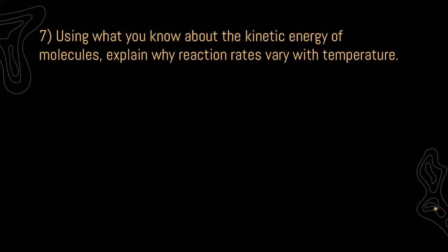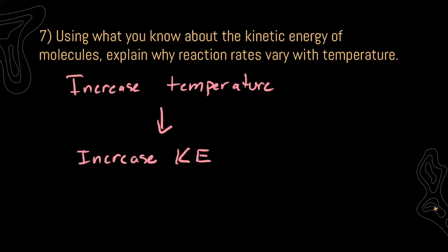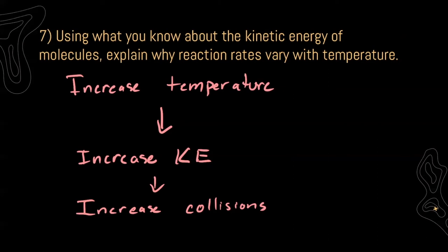Question 7 asks: using what you know about kinetic energy of molecules, explain why reaction rates vary with temperature. If we increase our temperature, we increase the average kinetic energy. If we increase the average kinetic energy, then we increase the number of collisions — more collisions means that our reaction is going to happen a lot faster. The same thing works for a decrease: if we decrease our temperature, we decrease the kinetic energy and ultimately decrease the number of collisions.